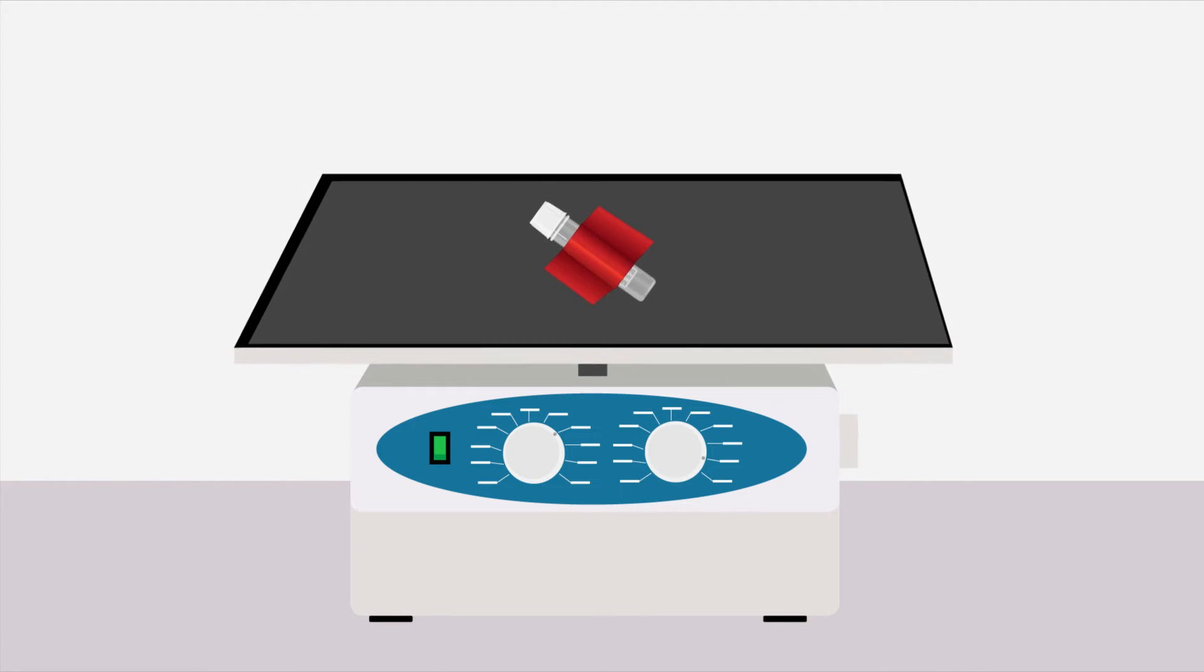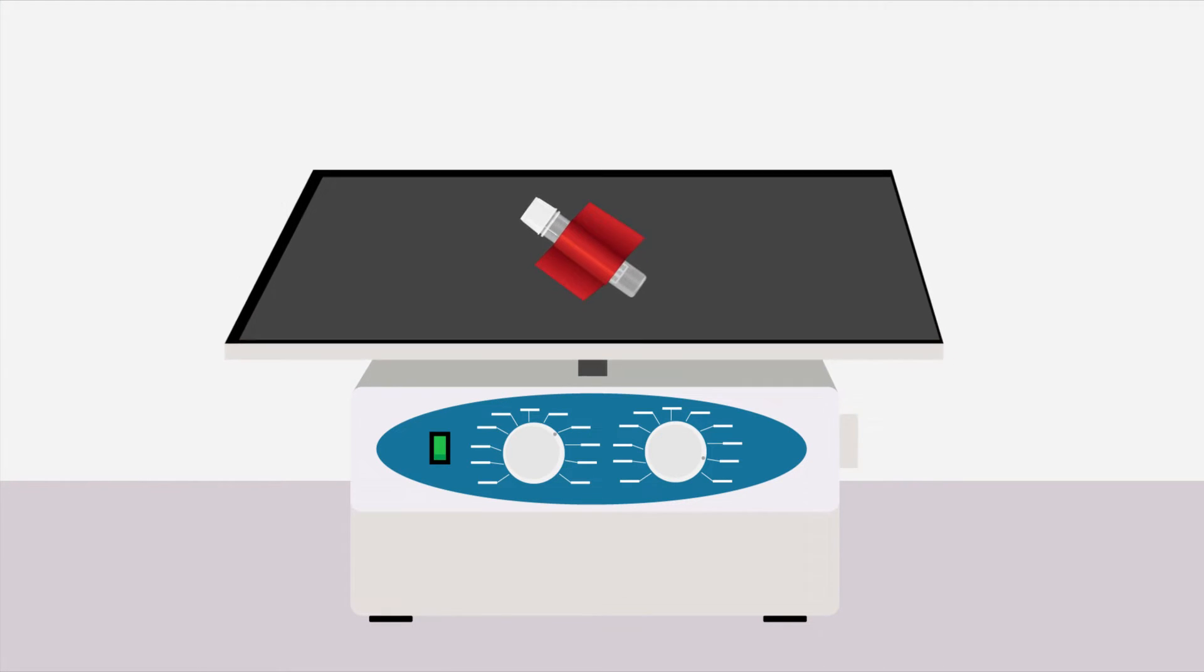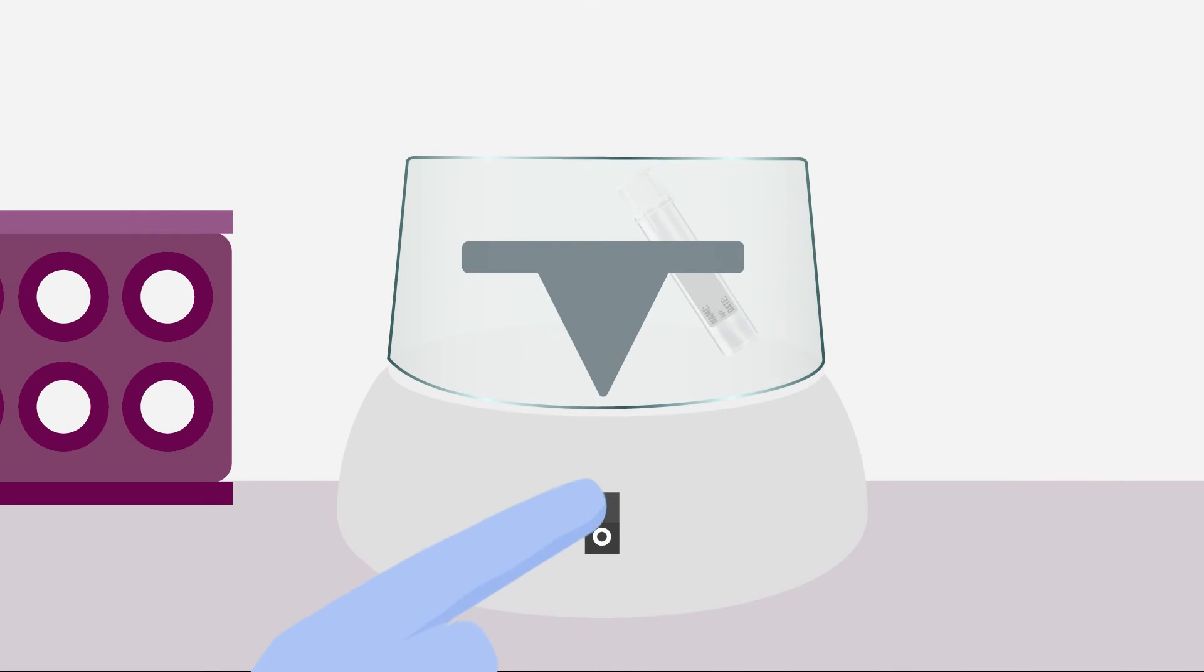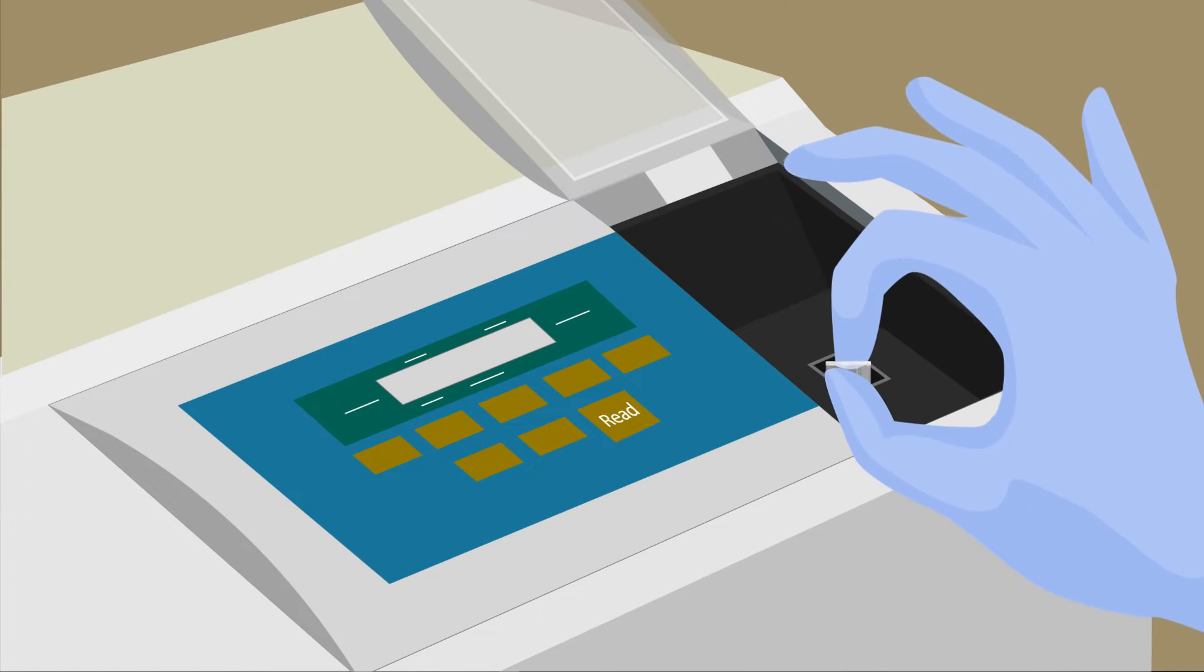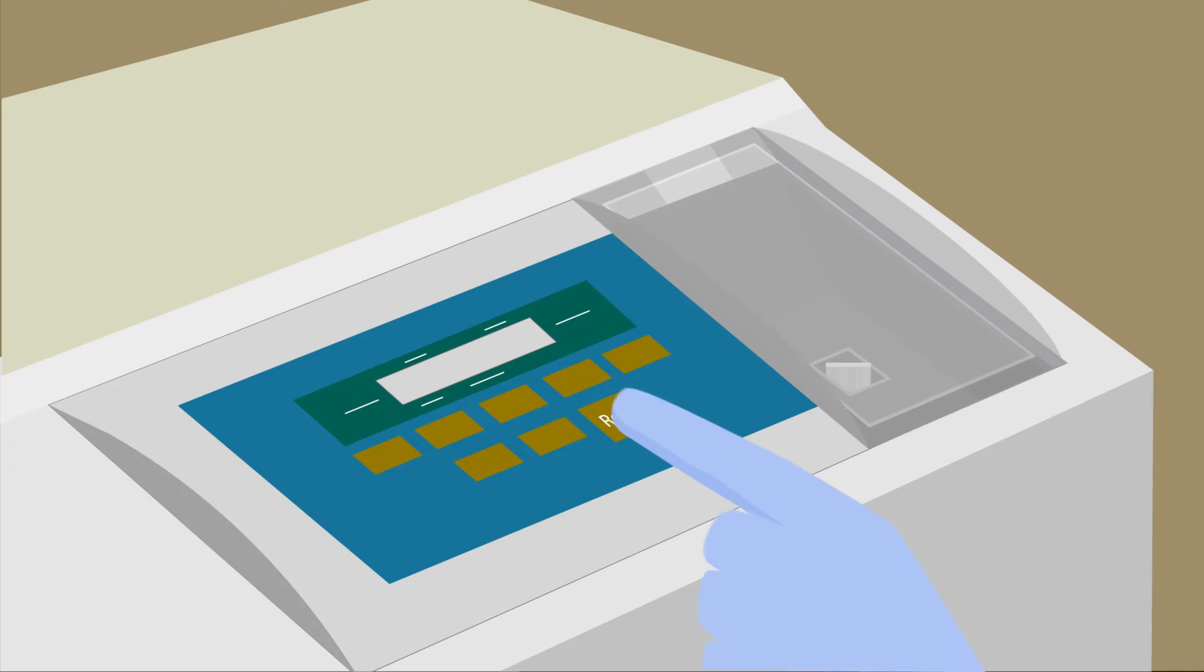Briefly pulse spin the tube to make sure all of the siRNA is at the bottom. Next, verify the siRNA concentration by measuring the UV absorbance at 260 nanometers with either a nanospectrophotometer or, as shown here, a traditional spectrophotometer. When using a traditional spectrophotometer, use Beer's law to calculate the siRNA concentration.